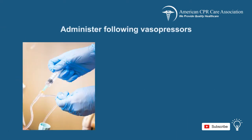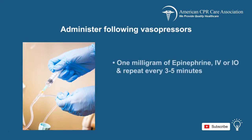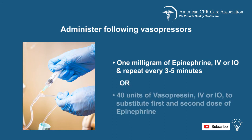During CPR, administer the following vasopressors. Give 1 milligram of epinephrine via IV or IO access and repeat every three to five minutes. As an alternative, you can give 40 units of vasopressin via IV or IO access to substitute for the first and second dose of epinephrine.